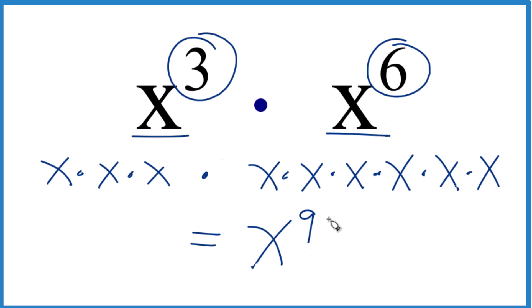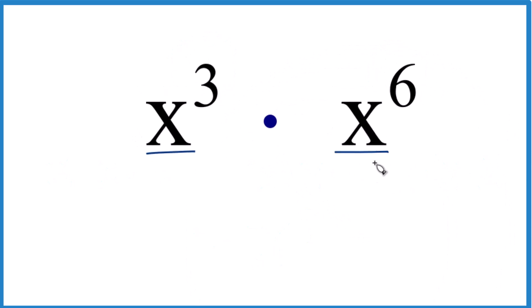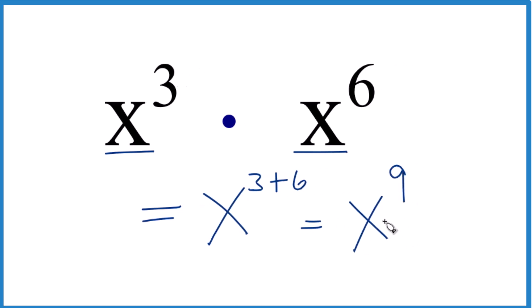You could also do it this way. You could recognize you have x here and here, they're the same, and then just add these together. So x to the third times x to the sixth equals x to the three plus six, which is x to the ninth. And that's what we got before.